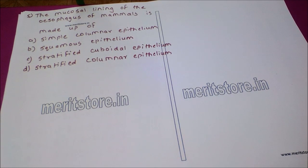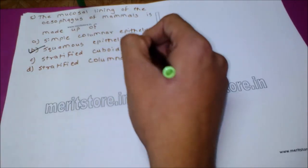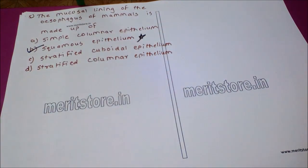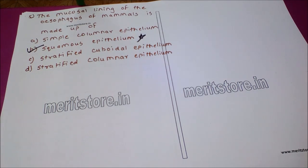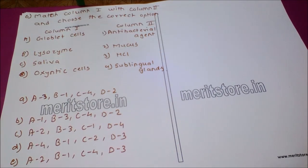The next question: the mucosal lining of the esophagus of mammals is made up of — option A: simple columnar epithelium, option B: squamous epithelium, option C: stratified cuboidal epithelium, option D: stratified columnar epithelium. The correct answer is option B, squamous epithelium. Squamous epithelium is present in the mucosal lining of the esophagus, with deep layers being cuboidal to columnar and the surface layer being flat and scale-like.